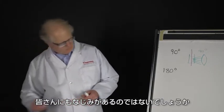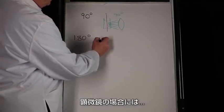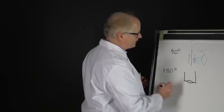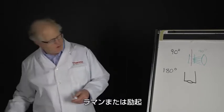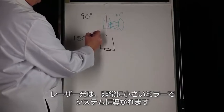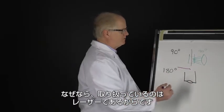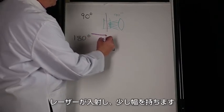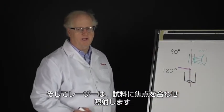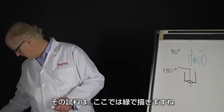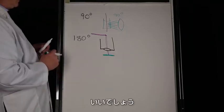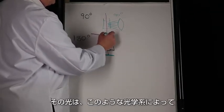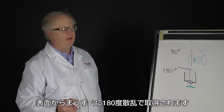With microscopes you'll see 180-degree collection is very common. So for a microscope — here is my microscope objective — the excitation laser beam is brought into the system with a small mirror, because you're dealing with a laser and don't need much of a mirror to bring it in. The laser comes through, focuses down onto the sample, which then scatters the Raman light back up through the system.